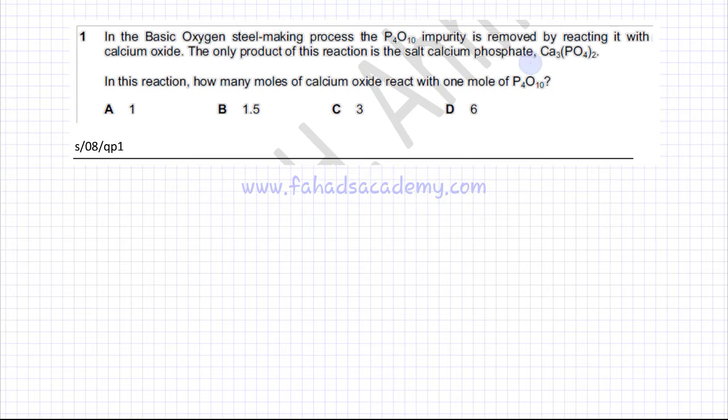There's a reaction going on where P4O10 phosphorus oxide is reacting with calcium oxide, and the only product of the reaction is the salt calcium phosphate. He's given you the product and is asking how many moles of calcium oxide react with one mole of P4O10.